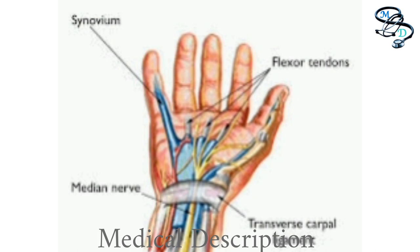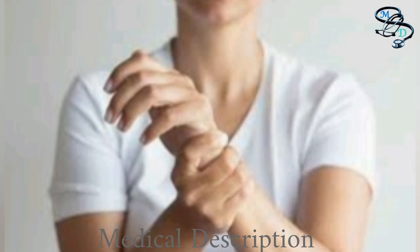Dropping objects may be due to numbness in the hand or weakness of the thumb's pinching muscles, which are controlled by the median nerve. See a healthcare provider if you have signs and symptoms of carpal tunnel syndrome that interfere with your normal activities and sleep patterns, as permanent nerve and muscle damage can occur without treatment.